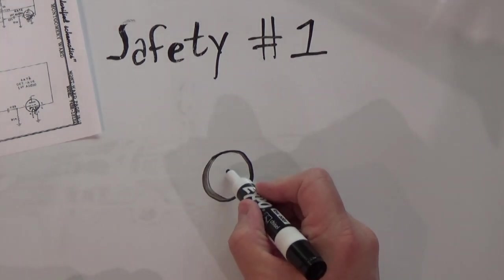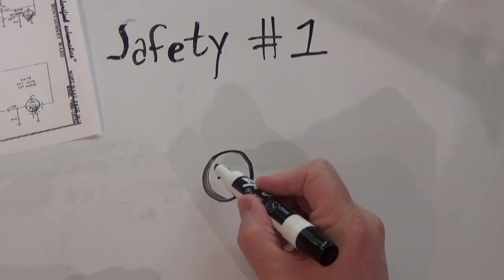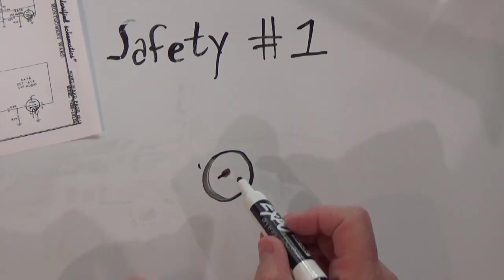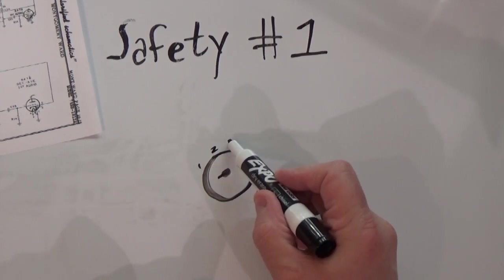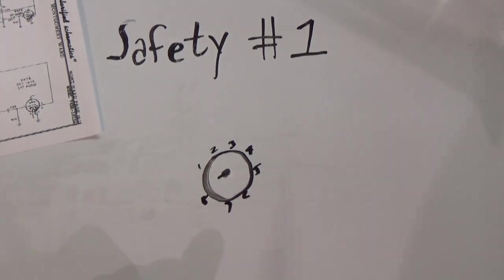Now, eight-pin tubes have a notch, as you know, like that. And underneath the radio, one is always on this side of the notch. So two, three, four, five, six, seven, and eight. That's how that works.